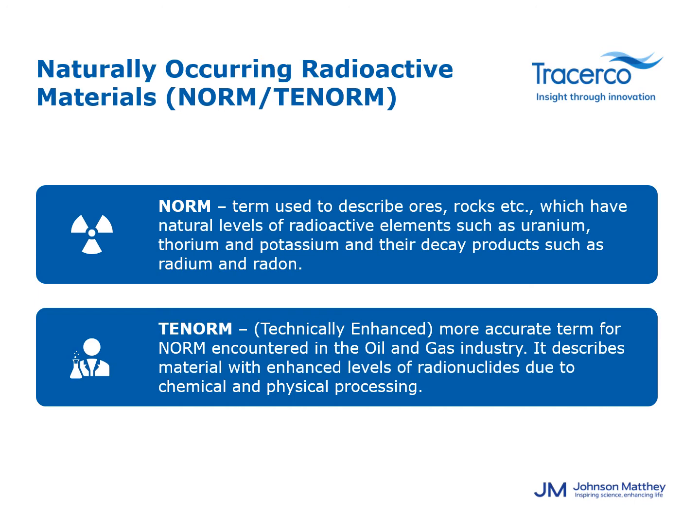TENORM, which stands for Technically Enhanced Naturally Occurring Radioactive Material, is probably a more accurate term for NORM encountered in the oil and gas industry. It describes material with enhanced levels of radionuclides due to the chemical and physical processing that goes on inside process equipment.